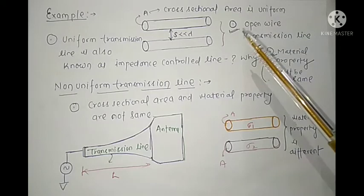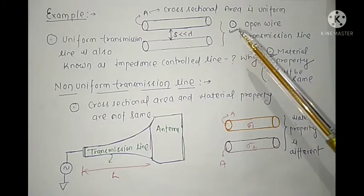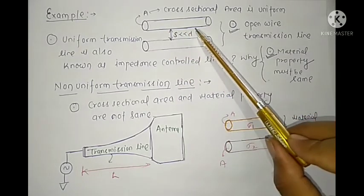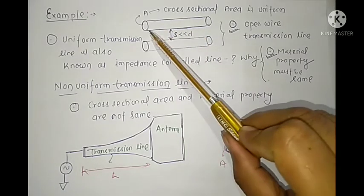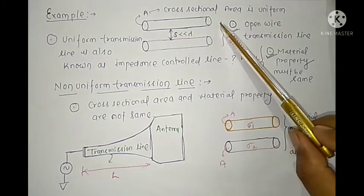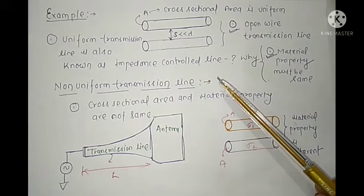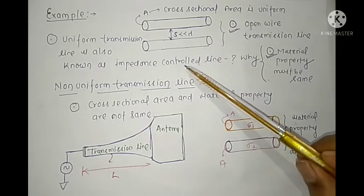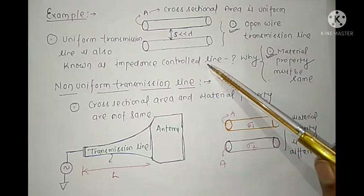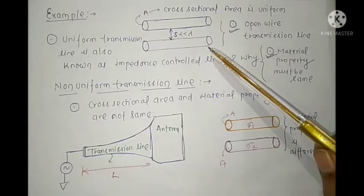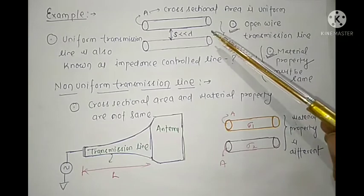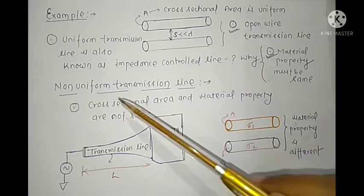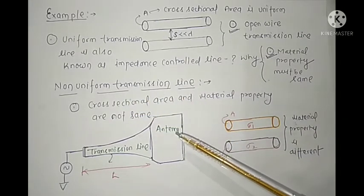The uniform transmission line is defined as one where the cross-sectional area of the conductor is the same along the length. Uniform transmission line is also known as an impedance control line. Remember that the material should also be the same.